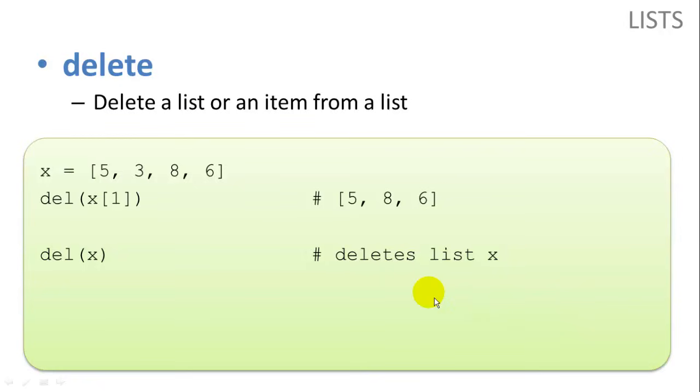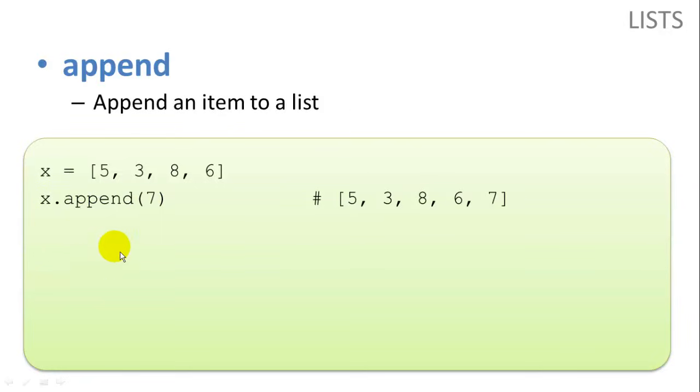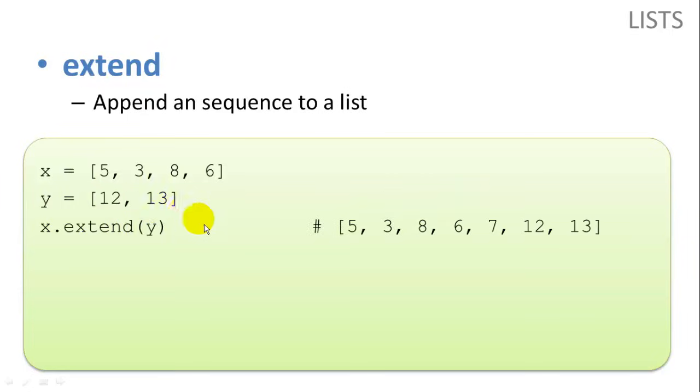Delete, we can delete an item from a list or we can delete a complete list. The item we would delete using the index or we can delete the entire list. Append, we can append an item to the end of the list using the .append function. Extend, we can combine two lists. This is very similar to the plus function that we already showed.